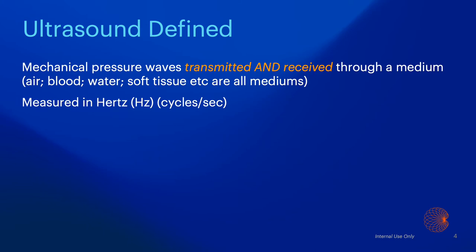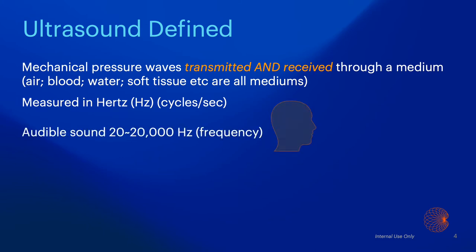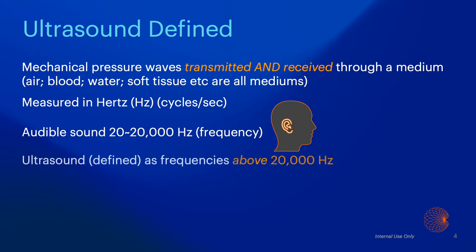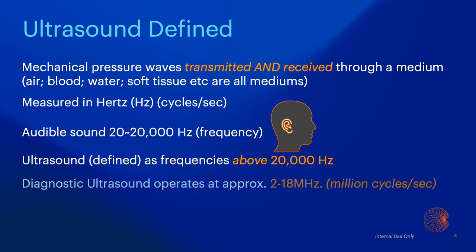It is measured in hertz, or cycles per second. Audible sound typically ranges between 20 to 20,000 hertz, or 20 to 20,000 cycles per second. Ultrasound is technically defined as frequencies in excess of that 20,000 hertz. Diagnostic ultrasound typically operates at approximately 2 to 18 million cycles per second, or 2 to 18 megahertz.